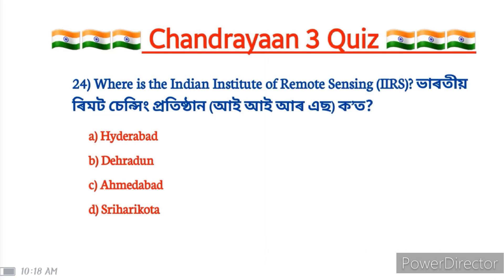Where is the Indian Institute of Remote Sensing (IIRS) located? The correct answer is option B: Dehradun, Uttarakhand.